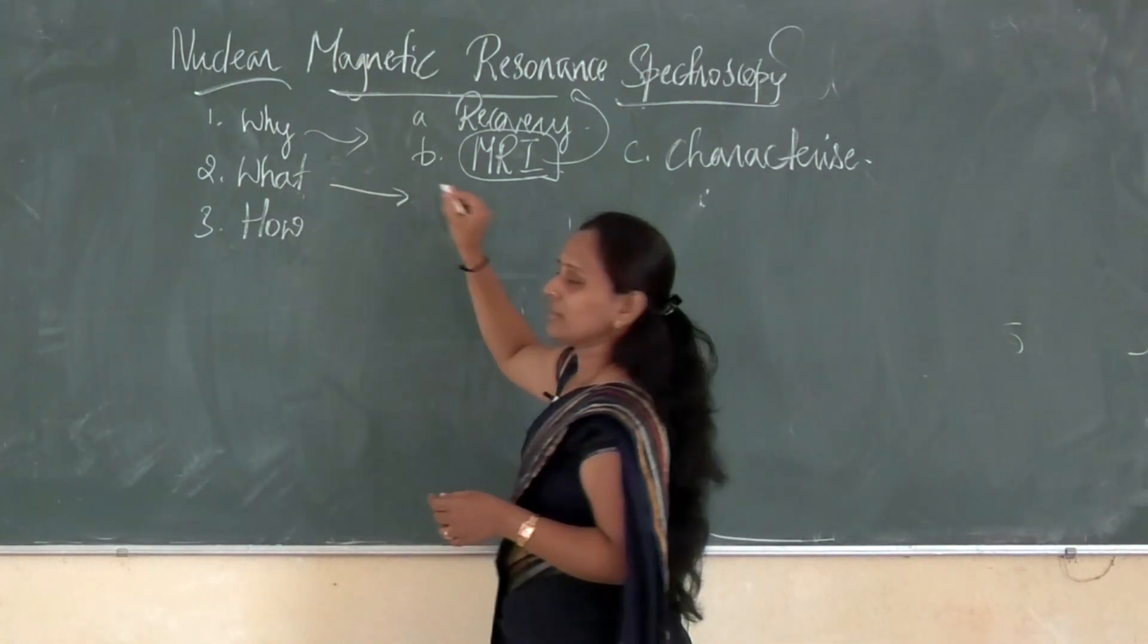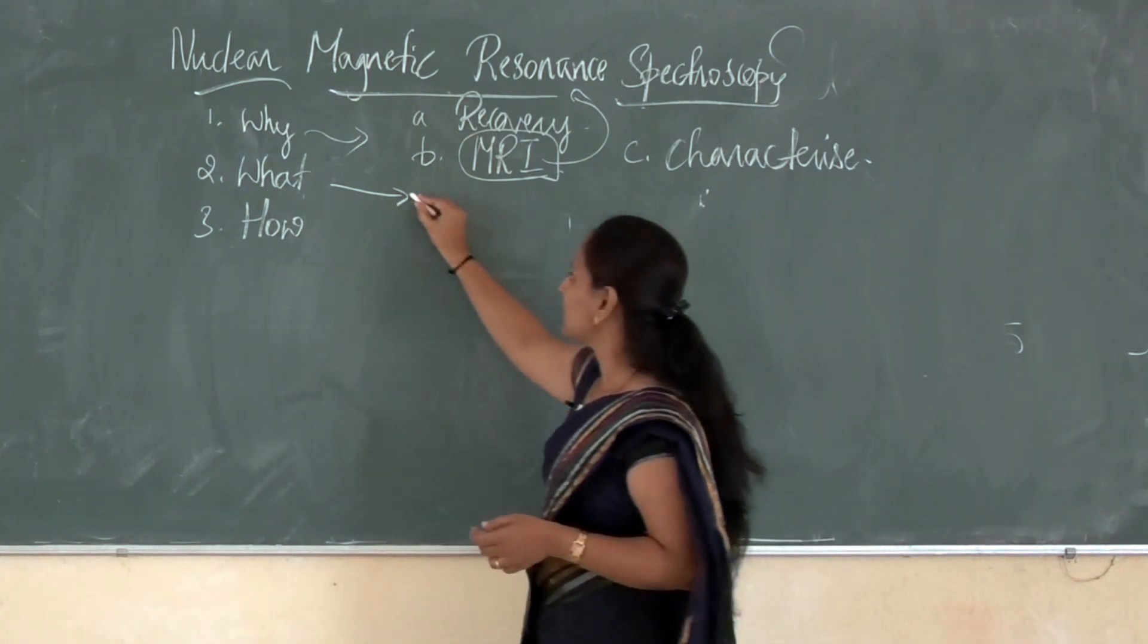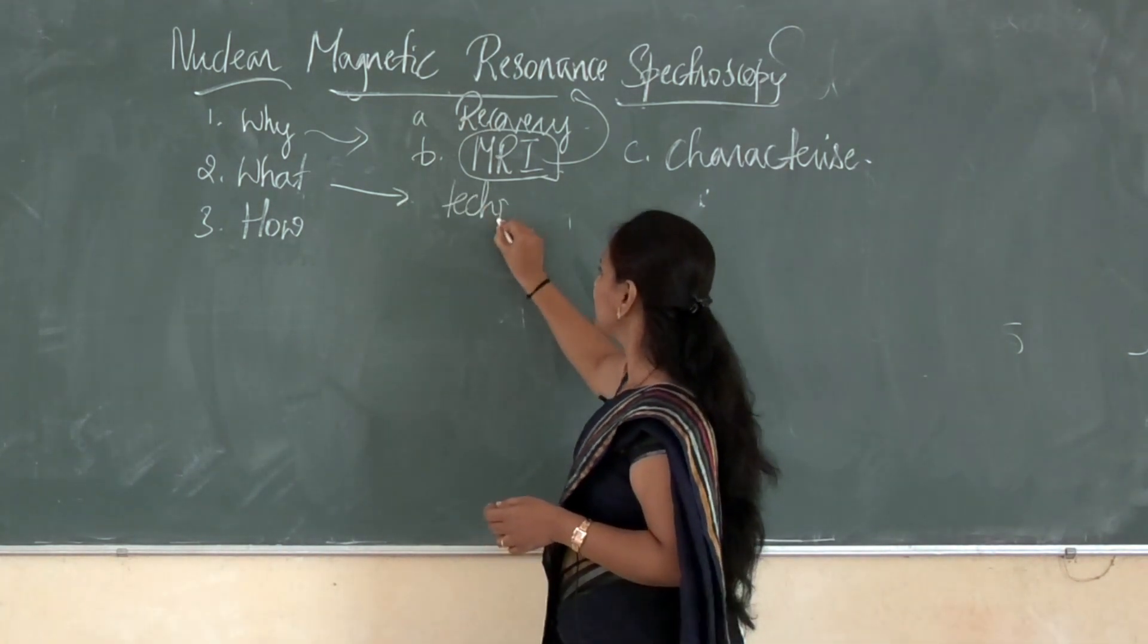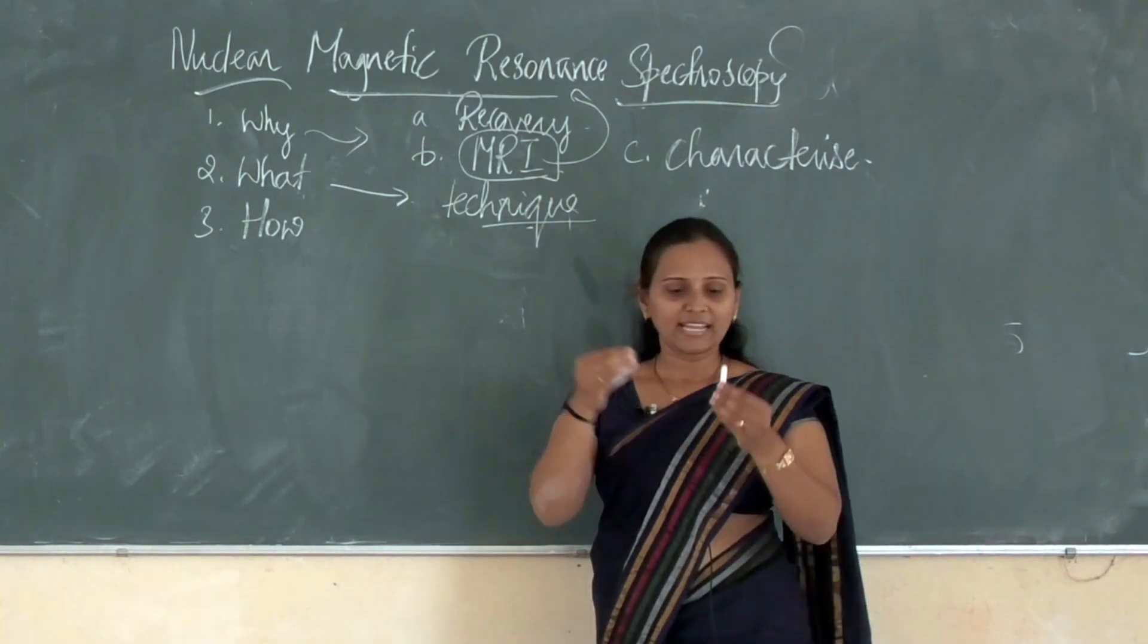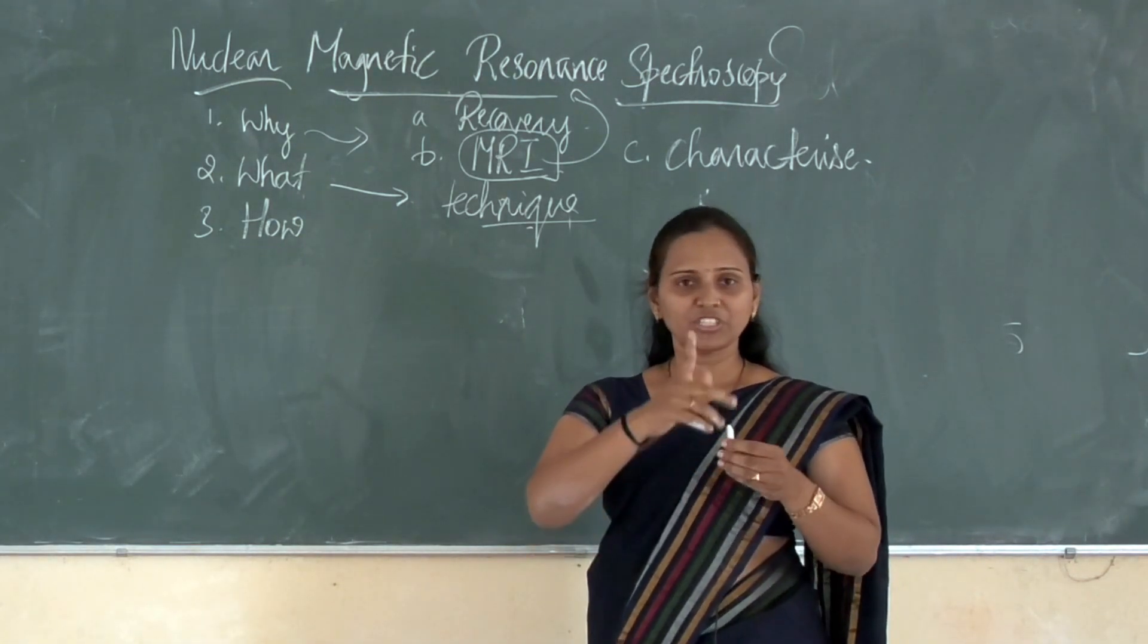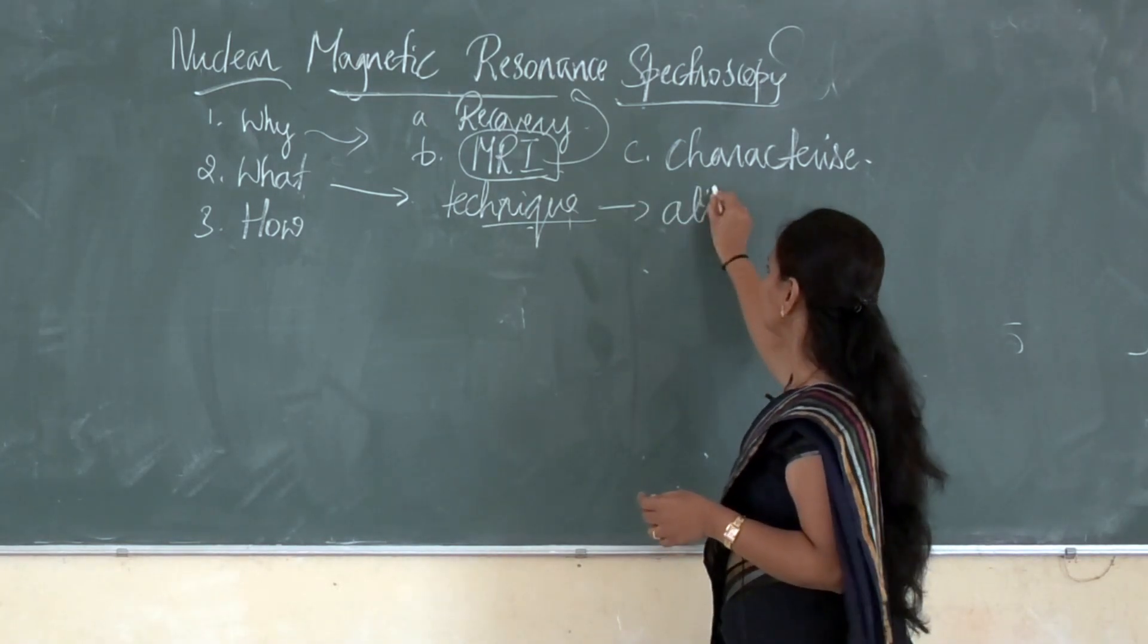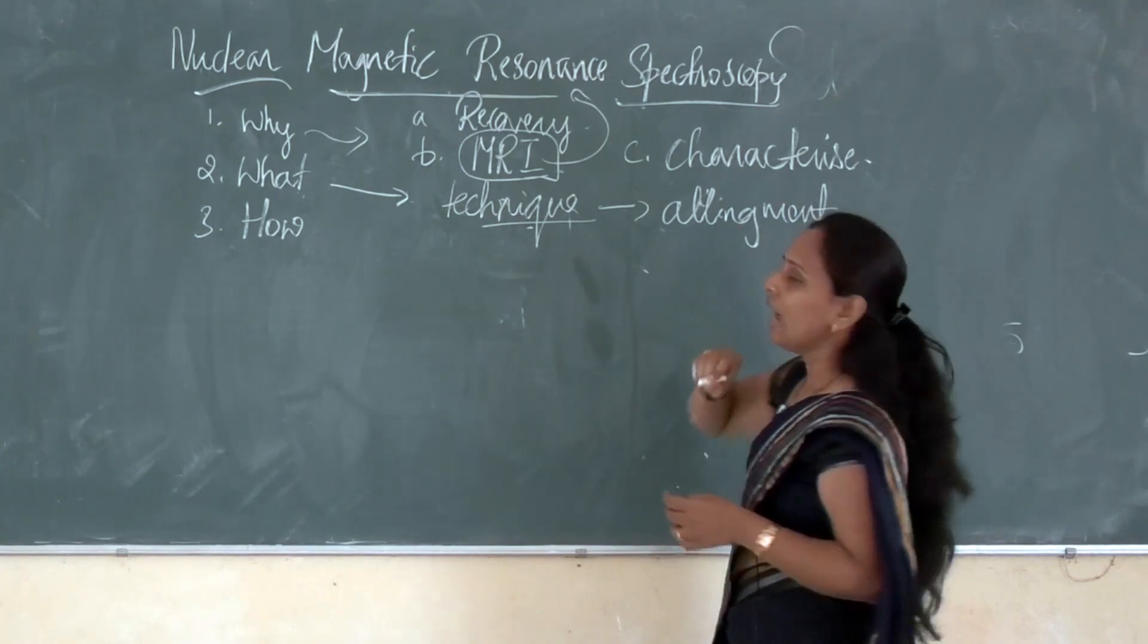What is NMR? What actually NMR is? NMR is a technique where, when an external magnetic field is applied to a proton present in a sample, which will align themselves. Alignment is seen.